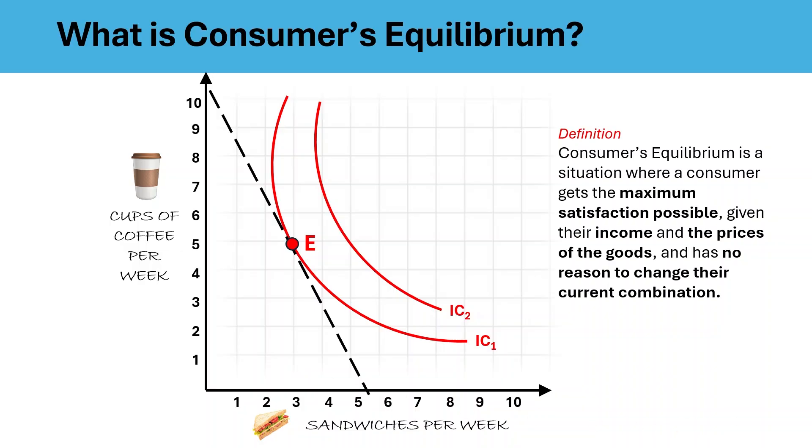This tangency point lies on the highest possible indifference curve the consumer can reach without exceeding their budget, which is shown by this budget line. That's what makes it the optimal and final choice for the consumer.